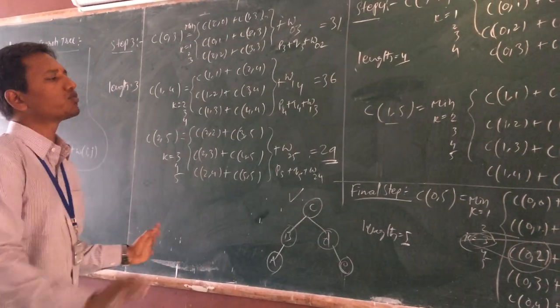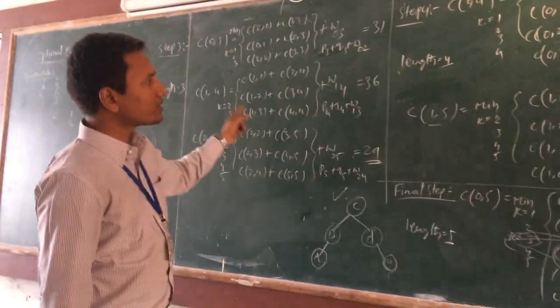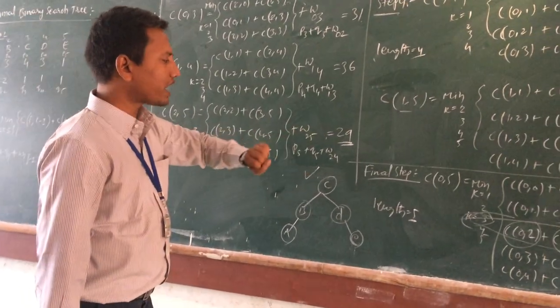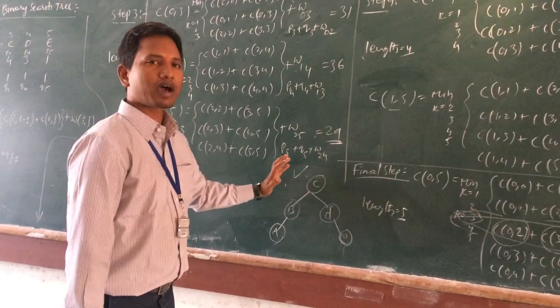We have to check 42 combinations. This is the dynamic programming method. In 5 steps, we can find out what is the best binary search tree.